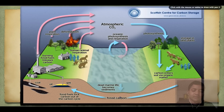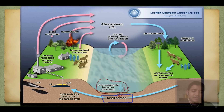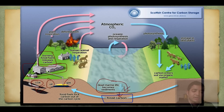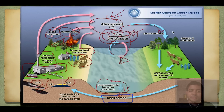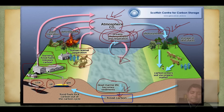Looking at the diagram: this is fossil fuel, and dead marine life becomes sediments. Fossil carbon when burned is converted into oil or gas, or was also converted into coal. This is used in industries and by burning of fossil fuels in cars. Human and animal respiration, deforestation, and plant respiration all lead to atmospheric carbon dioxide. The ocean also contributes through photosynthesis and respiration. Atmospheric carbon dioxide is fixed by oceanic photosynthesis and terrestrial photosynthesis, stored in land plants, and organic matter gets transferred through the food chain into soil.